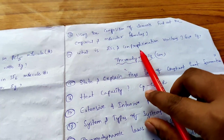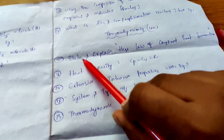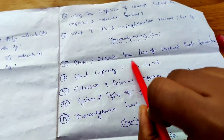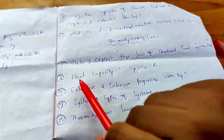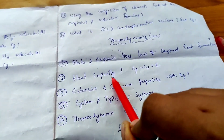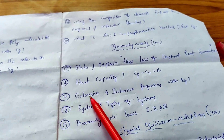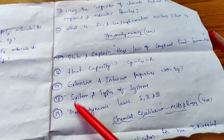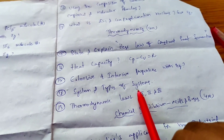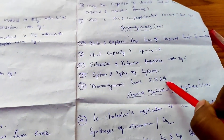Thermodynamics chapter has 5 questions worth 4 marks each. First: State and explain Hess's Law of constant heat summation — very important. Next: What is heat capacity? Derive Cp minus Cv equals R. Next: What are extensive and intensive properties with examples? Next: Define system and types of systems — open, closed, and isolated. Also: Define the first, second, and third laws of thermodynamics — also important.